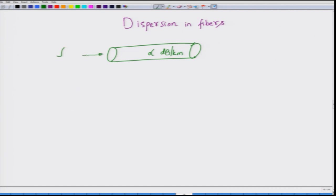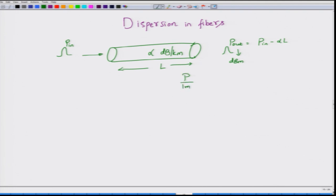When I send in optical pulses which carry information, after propagating through this fiber of length L, the power would be reduced. So if you had launched a power of P_in, the output power P_out will be P_in minus alpha times L. The reason we write minus alpha·L is that all powers are measured in dBm units, which means if P is the power referenced to 1 milliwatt, you take 10·log₁₀(P / 1 mW), and the result is the power expressed in dBm.